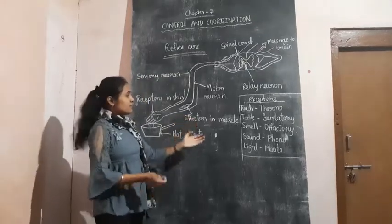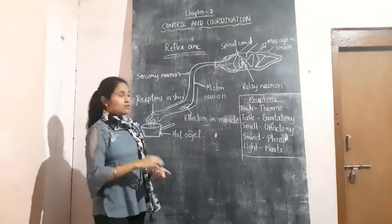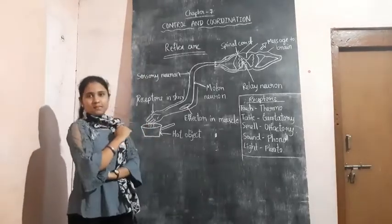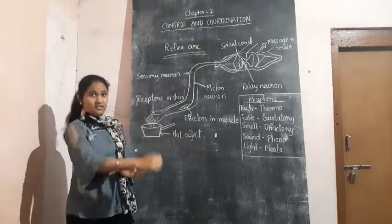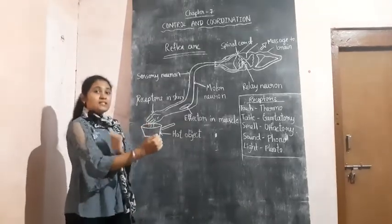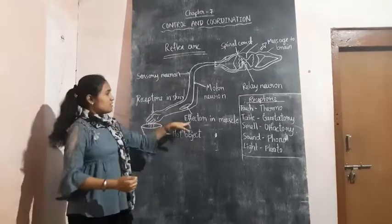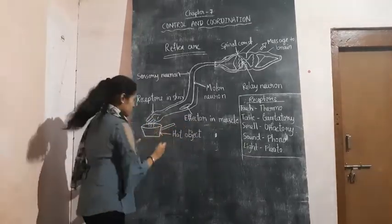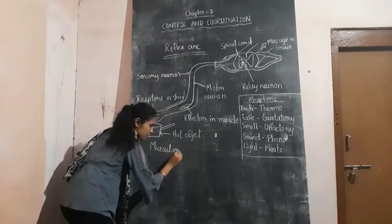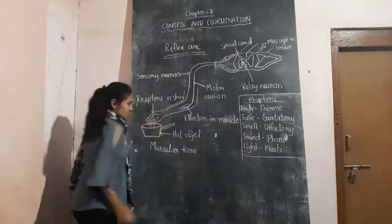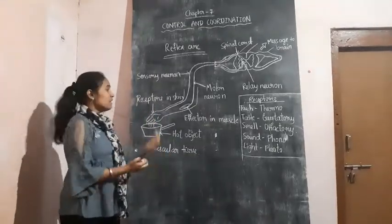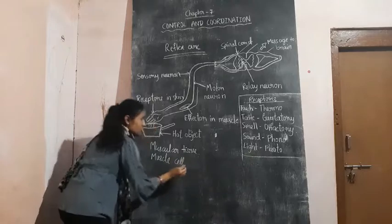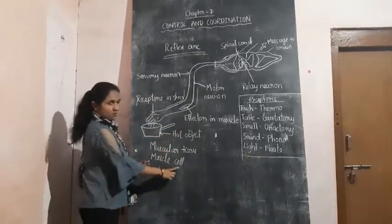When the signal reaches the muscle, we will move our hand. To move our hand, there should be movement in our cells — the muscle cells present in your hand. That is why the movement takes place in muscular tissue. If muscular tissue is to be moved, then the muscle cell must move, and the whole movement of your hand depends on this muscle cell.